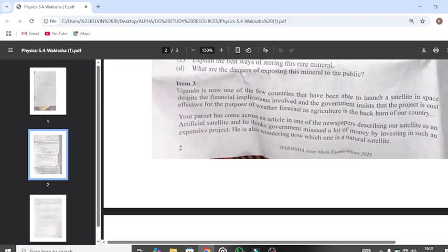Item 3 says Uganda is now one of the few countries that have been able to launch a satellite in space, despite the financial implications involved. The government insists that the project is cost effective for the purpose of weather forecast, as agriculture is the backbone of our country. Your parent has come across an article in one of the newspapers describing our satellite as an artificial satellite, and he thinks government misused a lot of money by investing in such an expensive project. He is also wondering which one is a natural satellite.